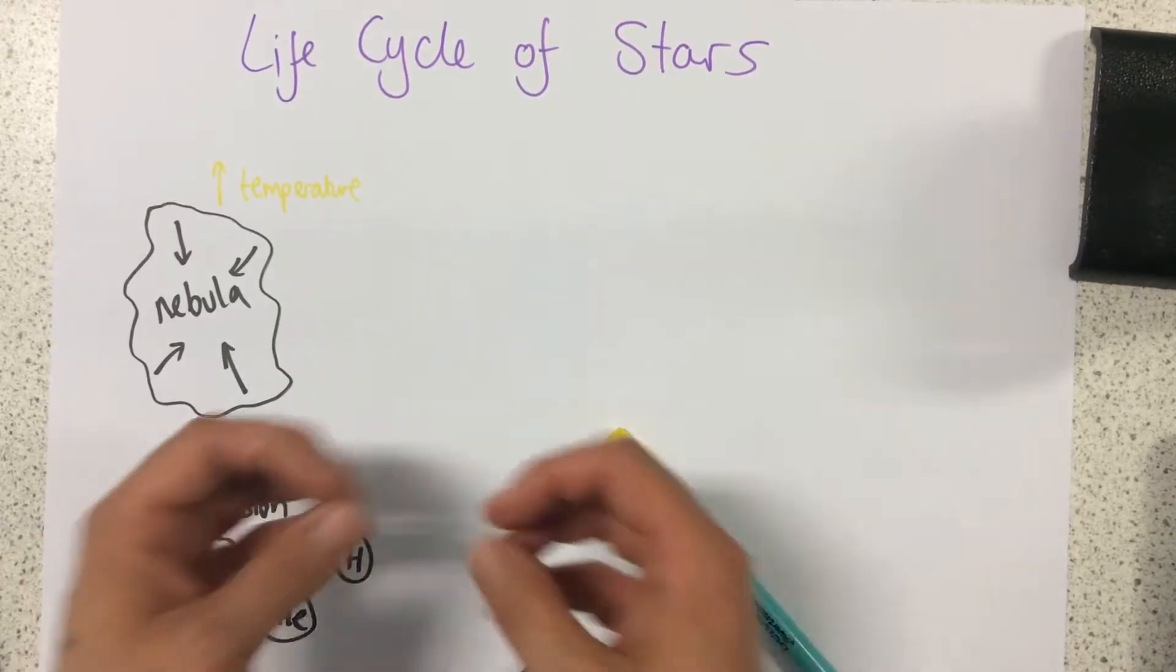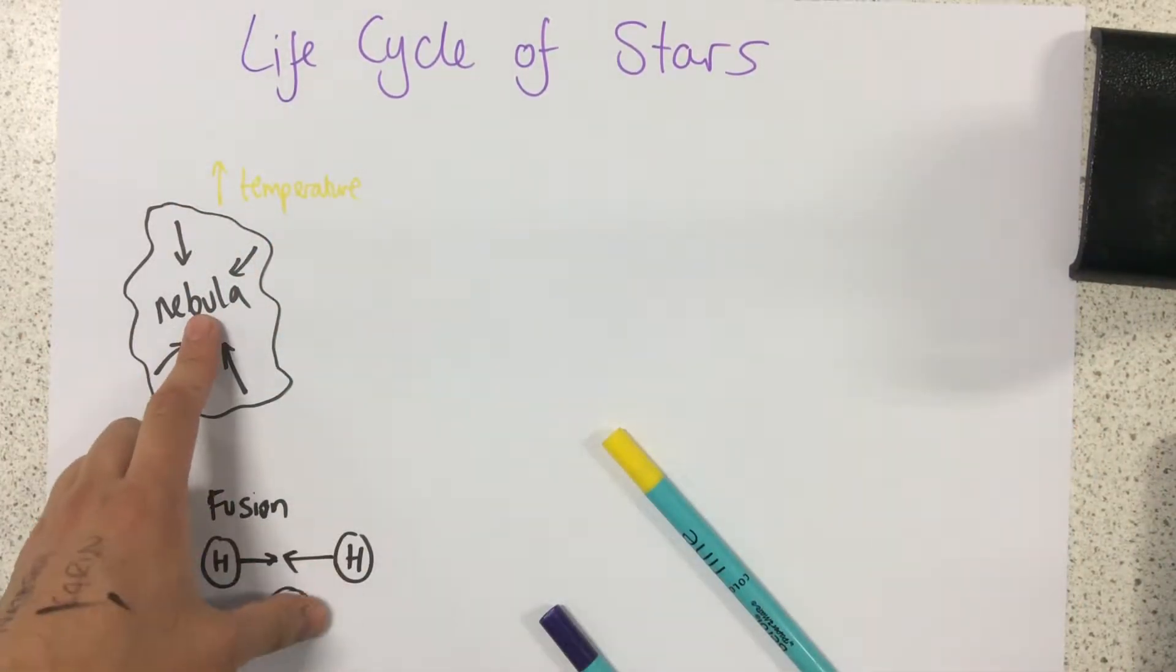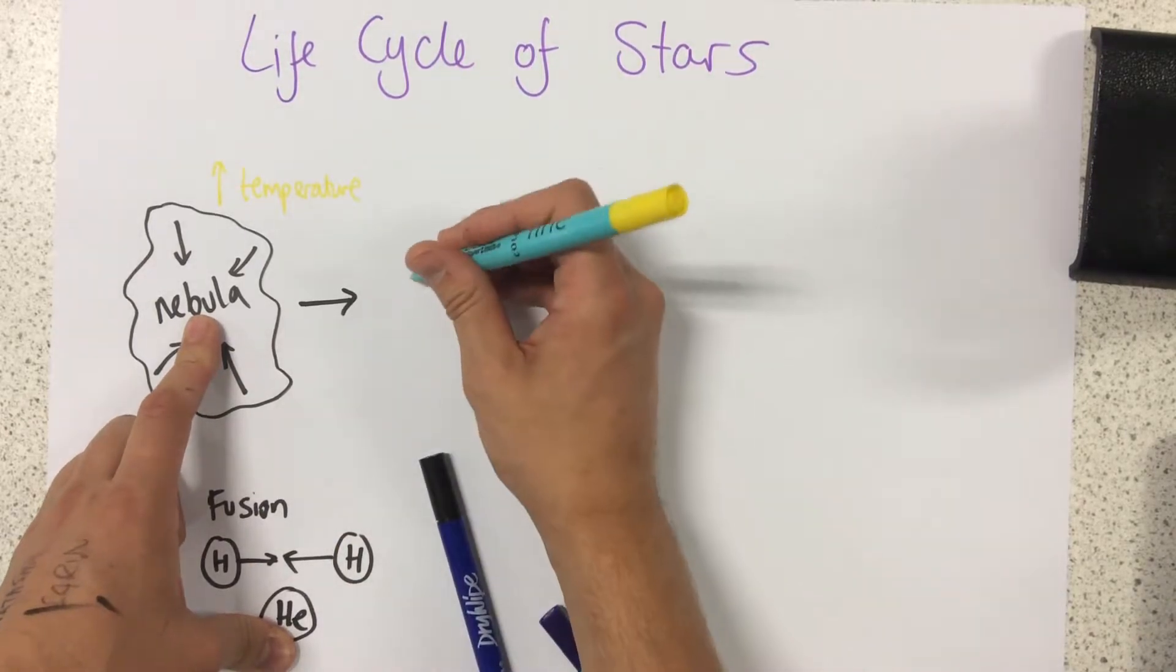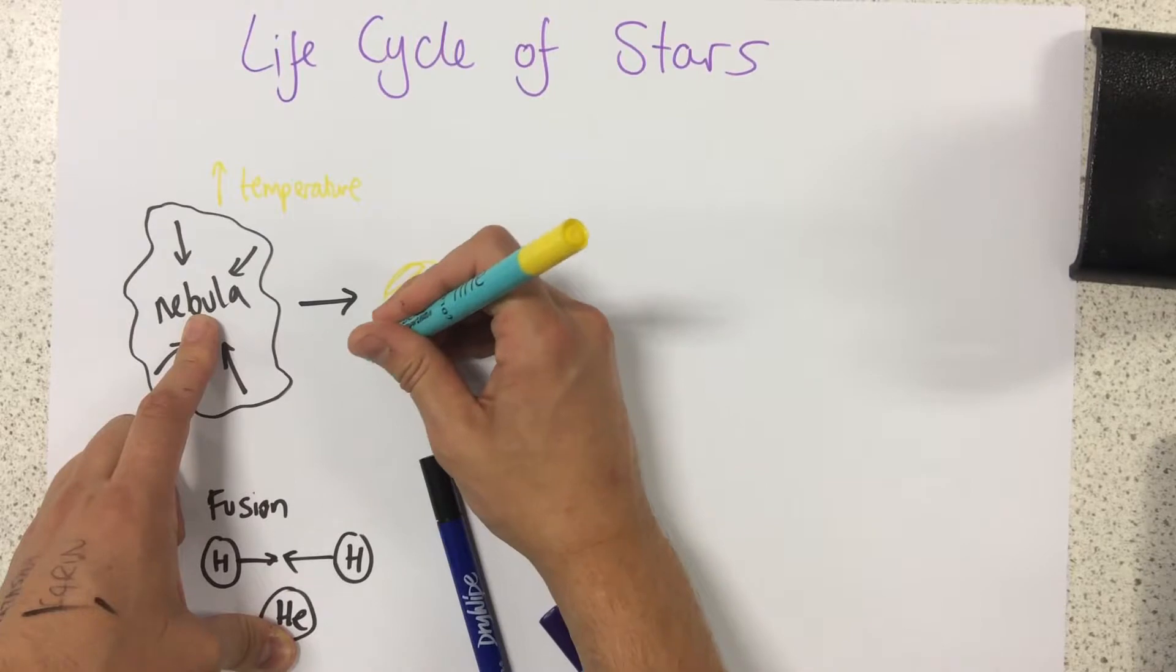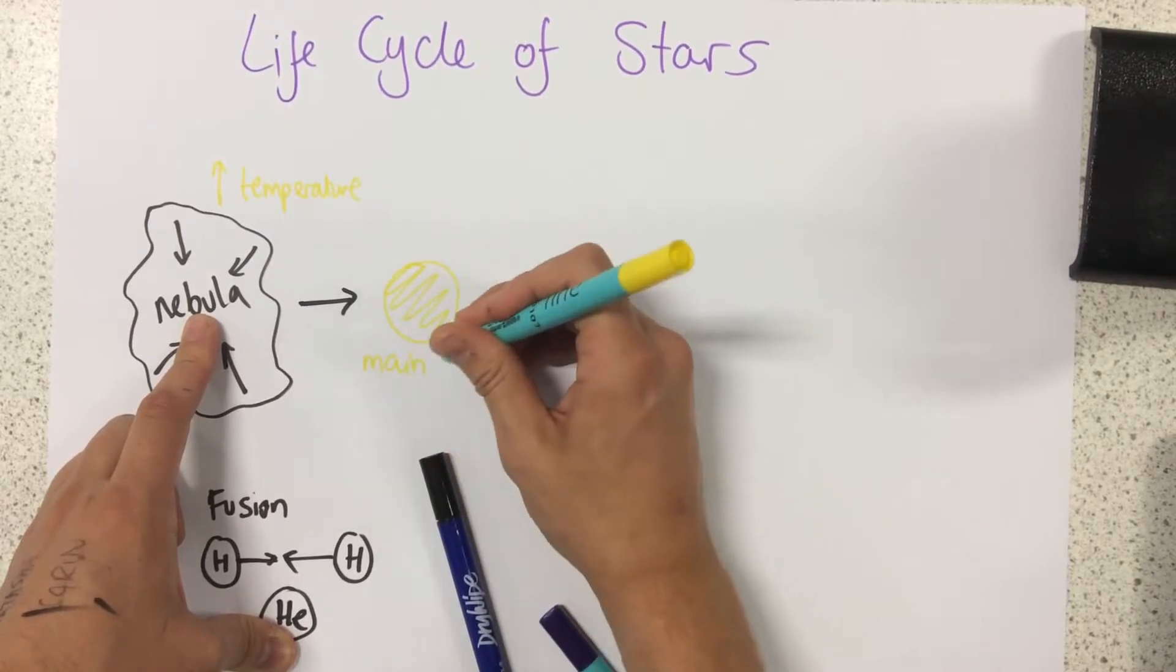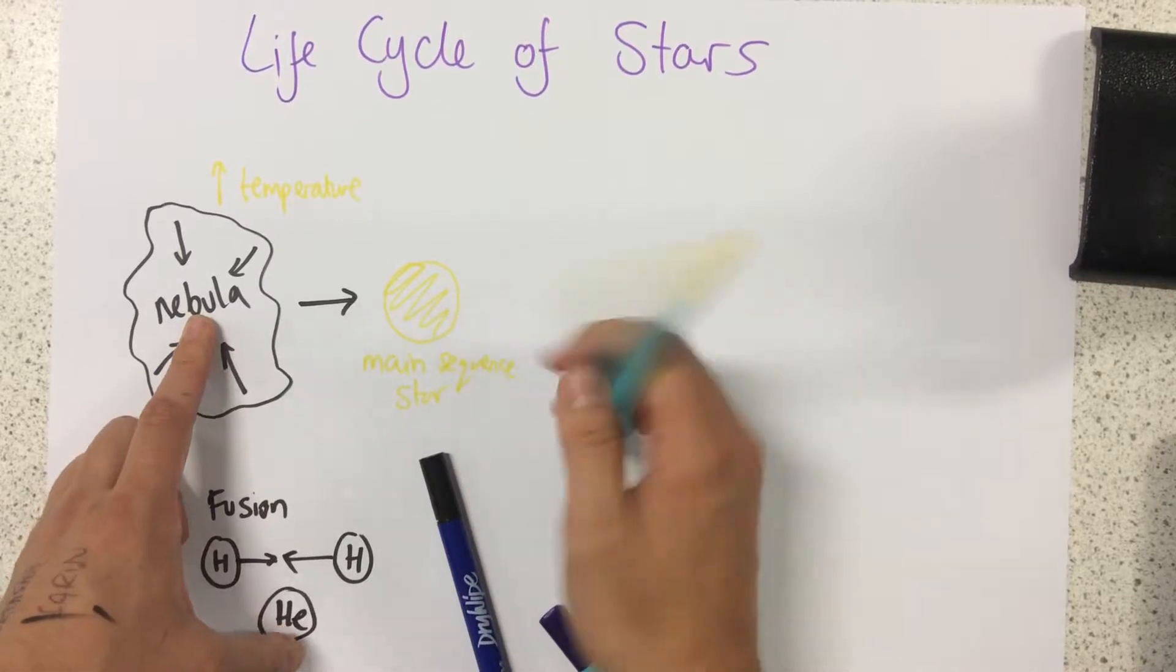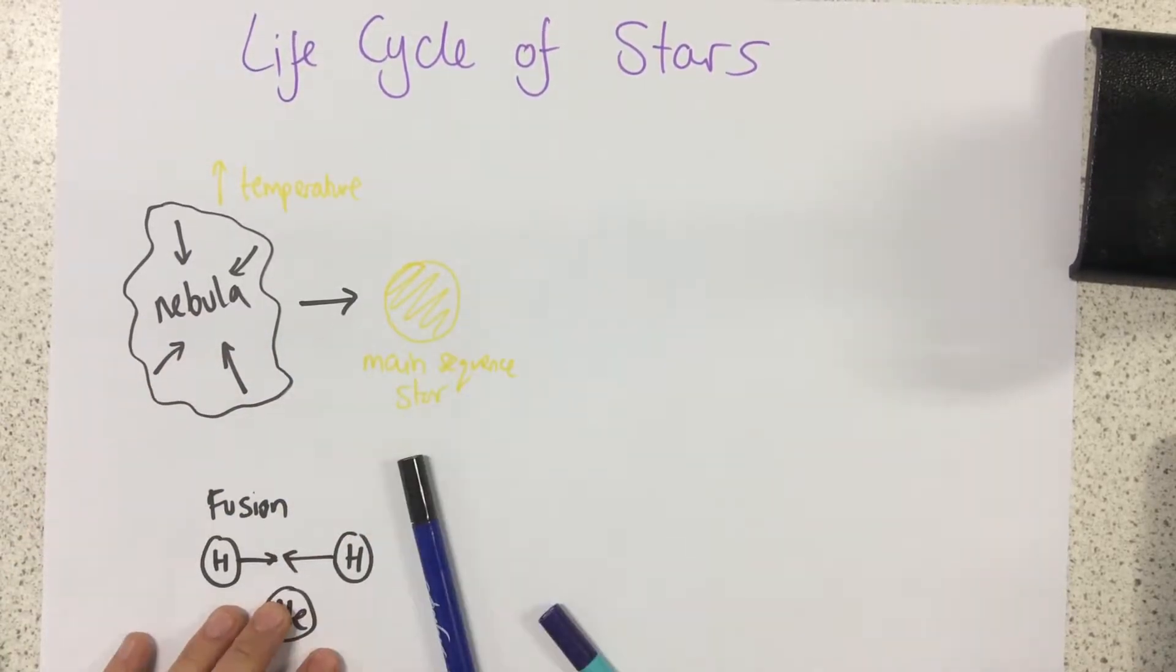When fusion reactions occur, they release loads and loads of energy, a huge amount of energy. With all of these fusion reactions going on, we can create a main sequence star. Our Sun is currently in this sequence and this sequence can last for billions of years.